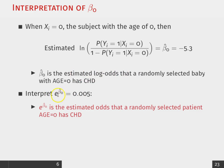Now, once we actually take and exponentiate this estimated coefficient, this makes a little bit more sense. So, this is a 0.005 increase in the estimated odds that a randomly selected patient has CHD.